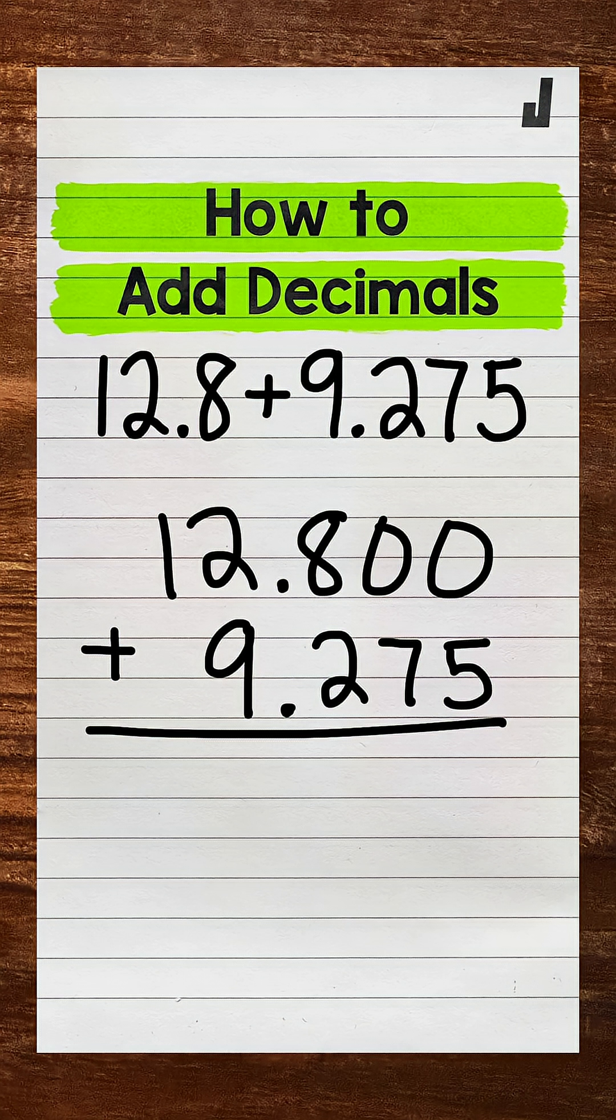Remember zeros to the right of decimal digits do not change the value of the number. So 12 and 800 thousandths, 12.800, is equivalent to 12.8, 12 and 8 tenths. So we're not changing the value of anything here.